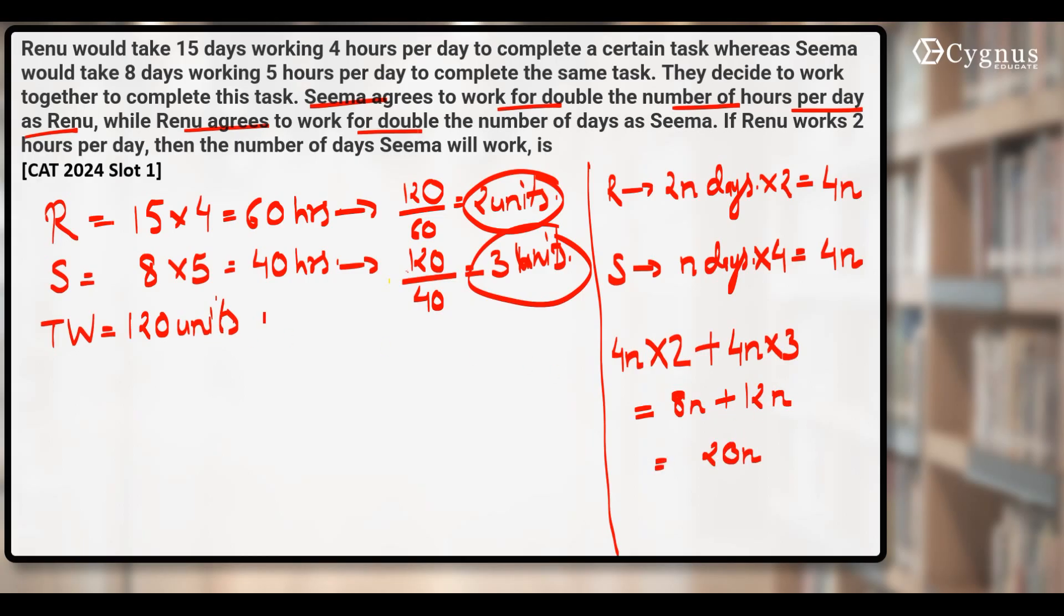What was the total work? We assumed it equals 120. So this 20n must equal 120 units. After solving this, we get 120 by 20, that is 6.